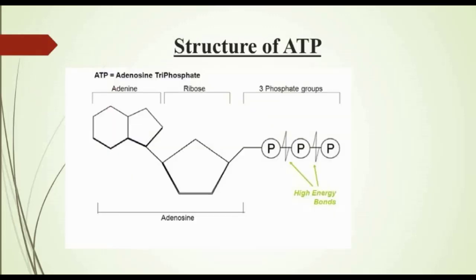Now, structure of ATP, page number 119. The ability of ATP to store and release energy is due to its molecular structure. Figure 7.3 shows simplified diagrams of ATP. Each ATP molecule has three subunits. First, adenine, which is a double-ringed nitrogenous base. Second, a ribose, which is a 5-carbon sugar. And third, three phosphate groups in a linear chain.